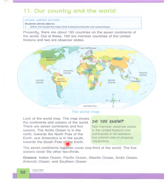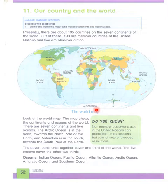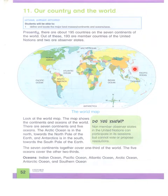Antarctica is in the south, towards the south pole of the earth. The seven continents together cover one-third of the world, and the five oceans cover the other two-thirds.